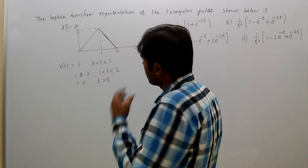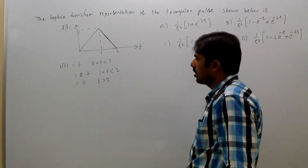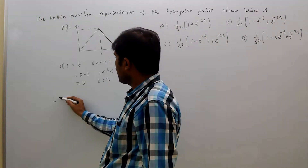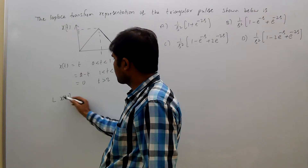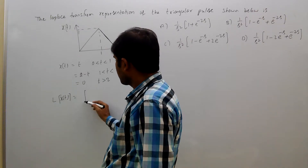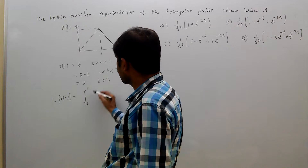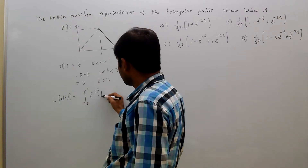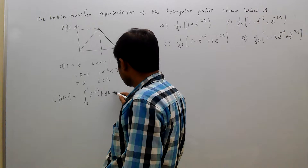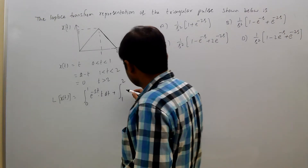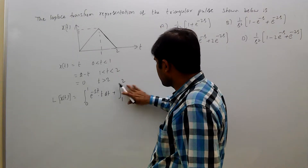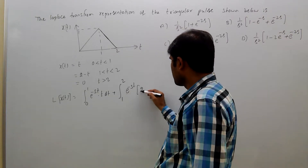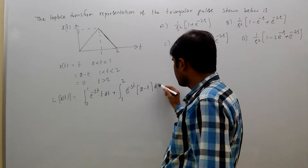So this is the equation for that pulse. Now, the Laplace transform of x of t equals integral from 0 to 1 of e power minus ST into T dt, plus integral from 1 to 2 of e power minus ST into 2 minus T dt.